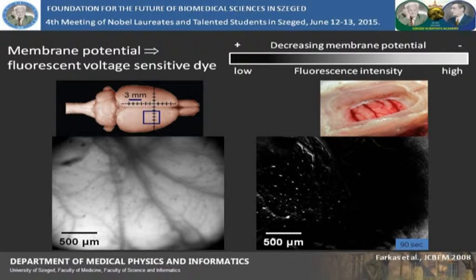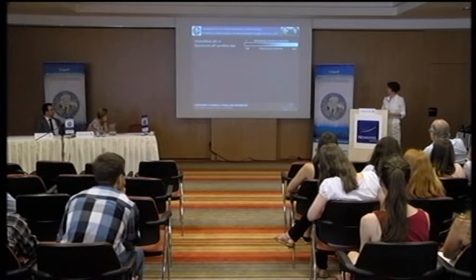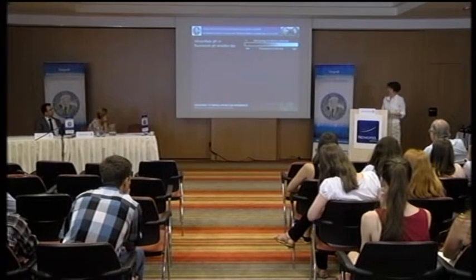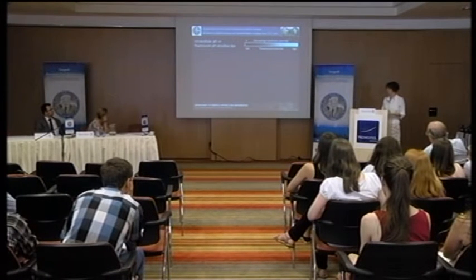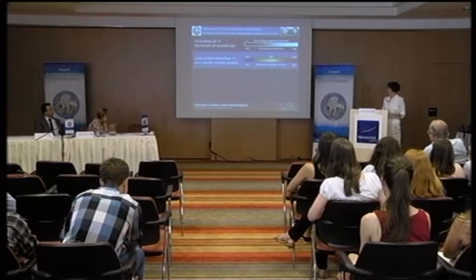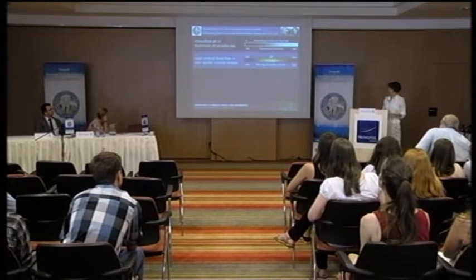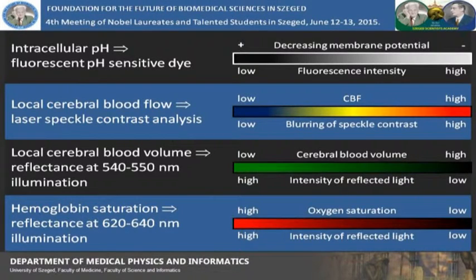With the help of this dye, we can visualize the propagation of spreading depolarization waves through a closed cranial window created above the parietal cortex of the rat. This imaging system can look at membrane potential changes, but also changes in blood flow. For this, we use laser speckle contrast analysis, and the blurring of the speckle contrast correlates with blood perfusion.